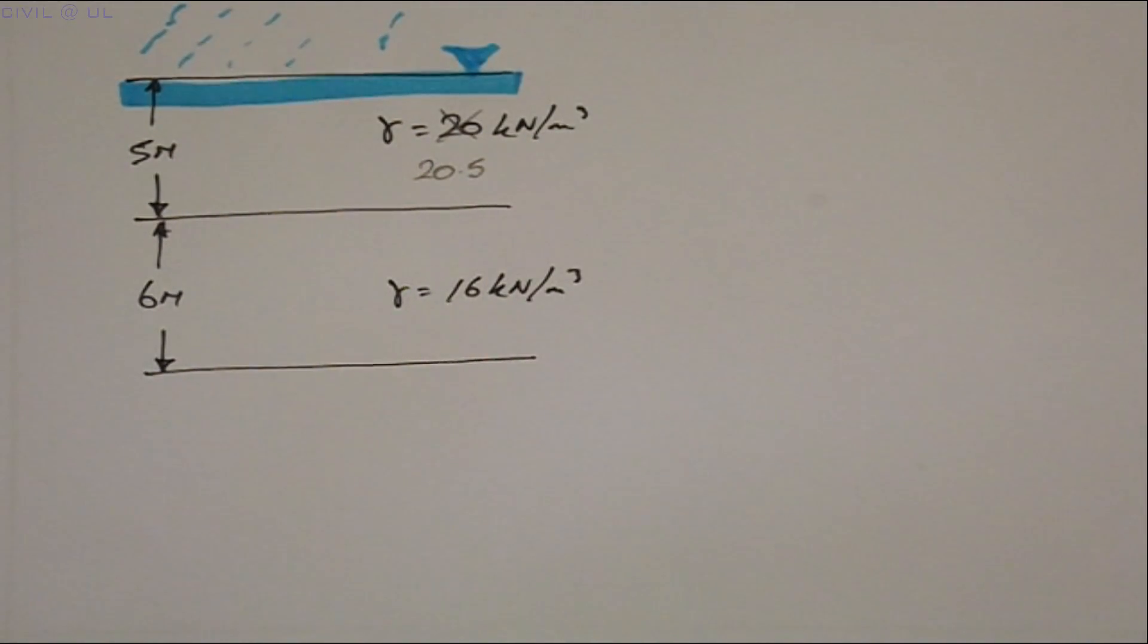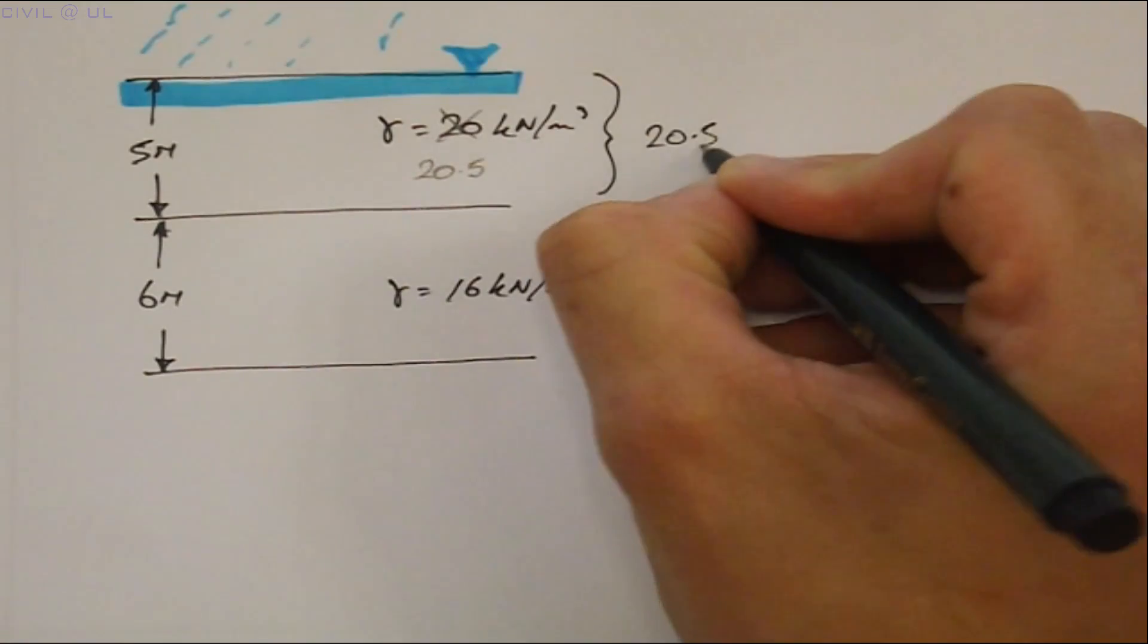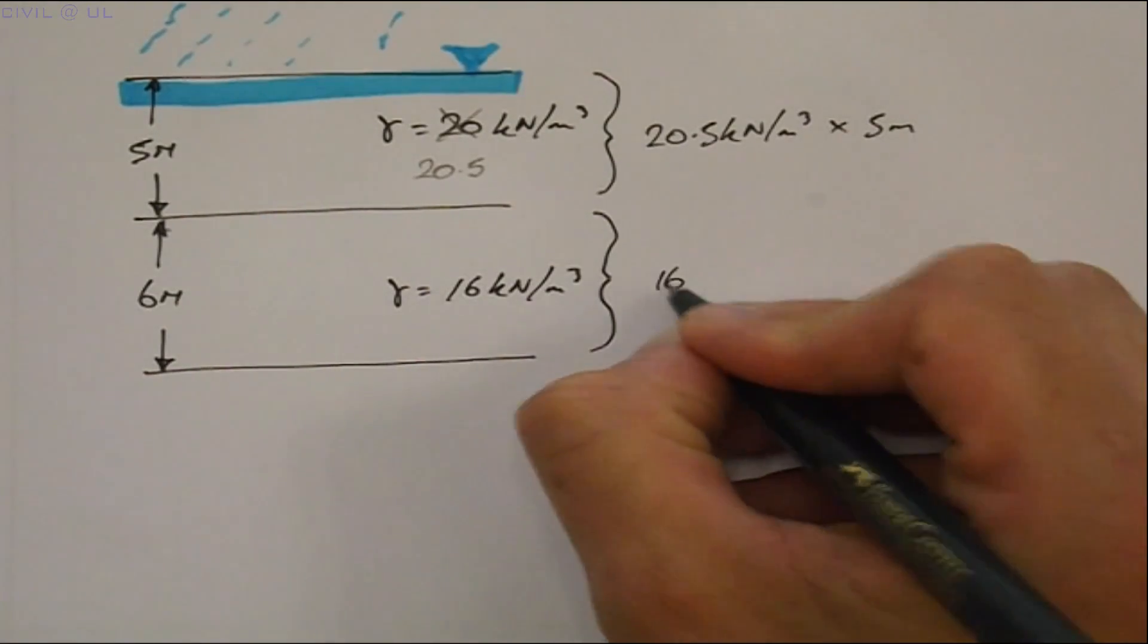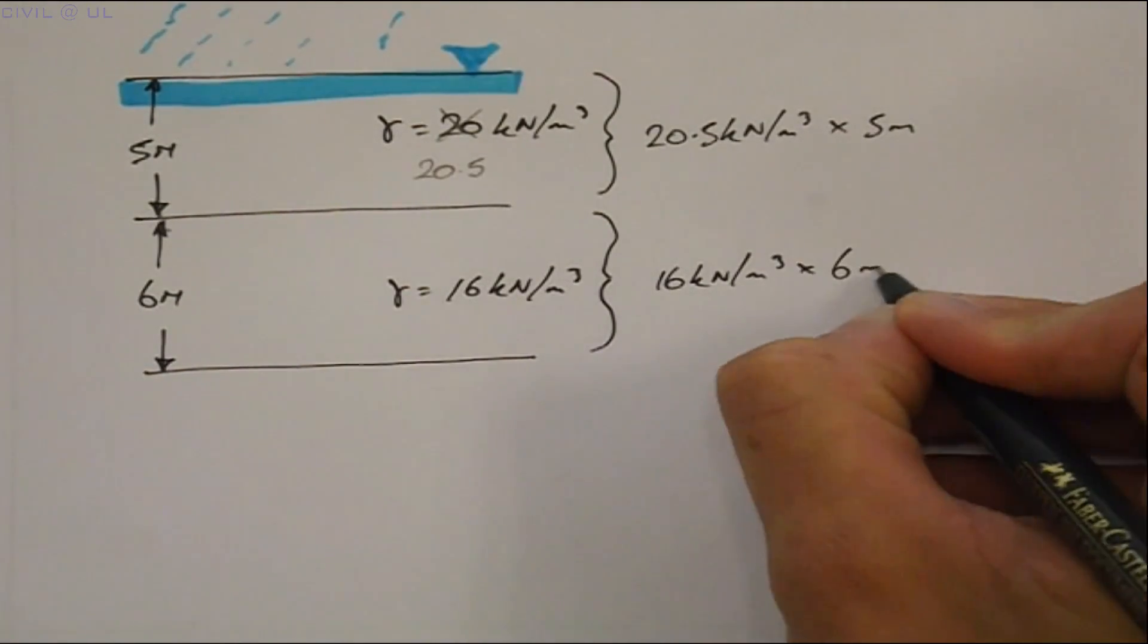So starting with the total stress. We have for strata one 20.5 kN per meter cubed multiplied by 5 plus for strata two 16 kN per meter cubed multiplied by 6 meters.